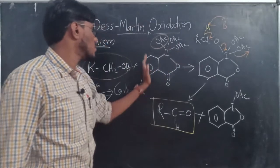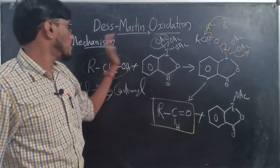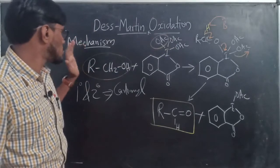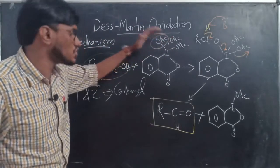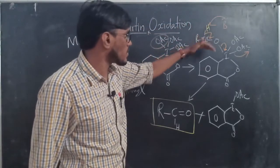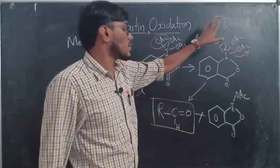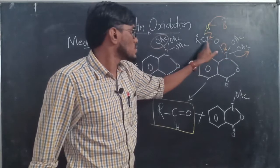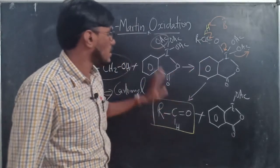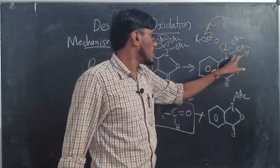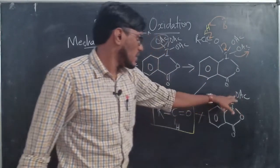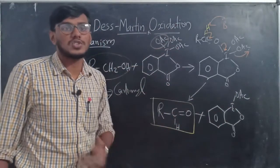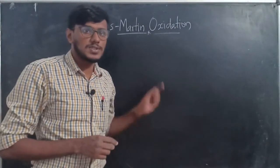To summarize: Dess-Martin periodinane (DMP) is the reagent — a hypervalent iodine(V) compound. In the first step, one acetate group is exchanged with the alcohol. In the next step, removal of a proton by a base causes bond cleavage, forming RCHO (an aldehyde) and releasing one OAc group. This is the mechanism of Dess-Martin oxidation.